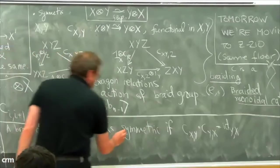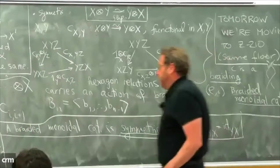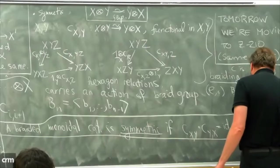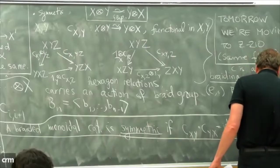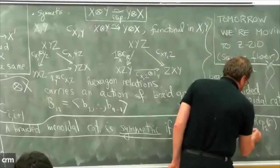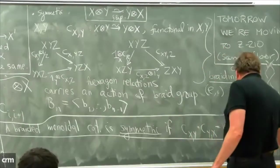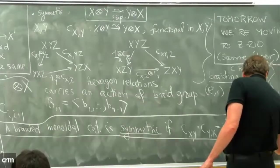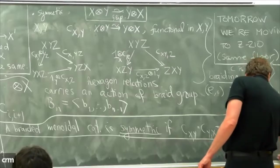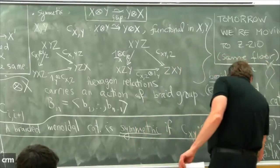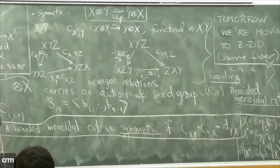A braided category is symmetric if c_{y,x} ∘ c_{x,y} is the identity. Our category is symmetric. Another important structure is the existence of dual representations. If x is in Rep_k(g), we have the dual x* also in Rep_k(g), which is the ordinary dual space, where g acts on x* by the dual of g⁻¹ acting on x.